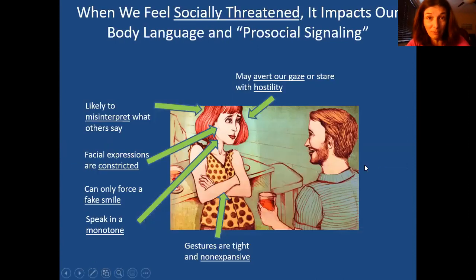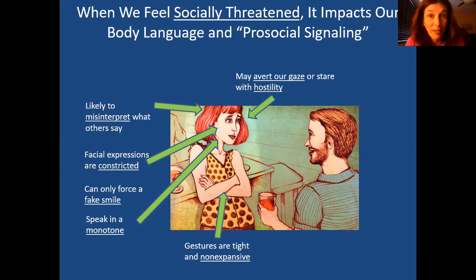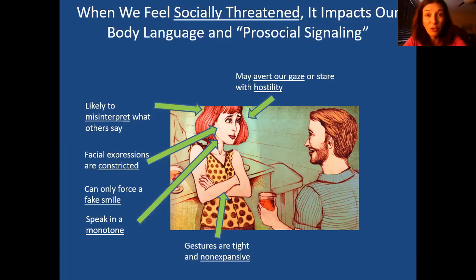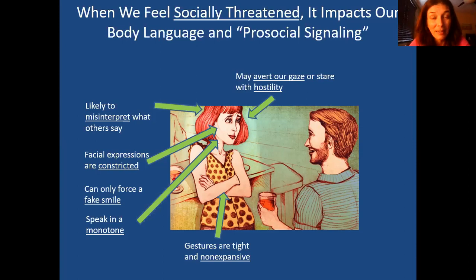When we feel threatened, it impacts our body language. Even if we want to connect, because we're socially anxious and perceiving a threat, we're not able to send off signals that we're receptive or interested in connecting. We're kind of in threat mode - more constricted in our face, it's hard to smile genuinely, our voice tone is more monotone, we have a hard time making comfortable eye contact, and our gestures might be tight and stiff. When we show those signals, people might think we're not interested, or kind of boring or cold, so it's going to be hard for us to connect.